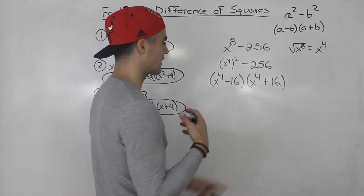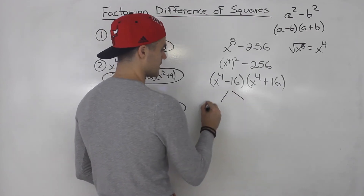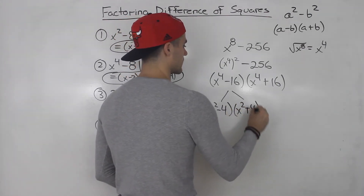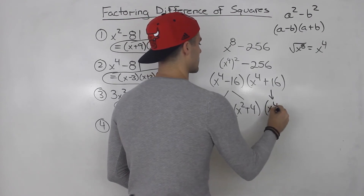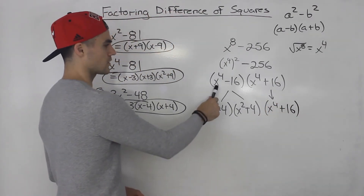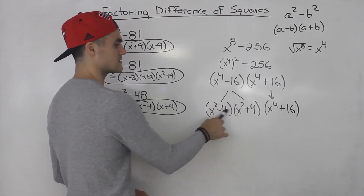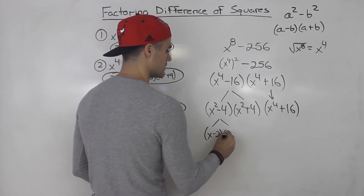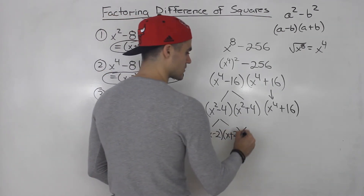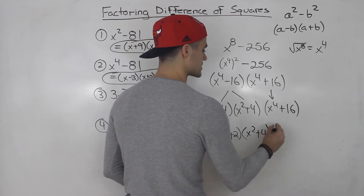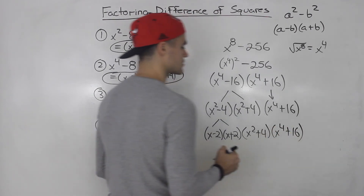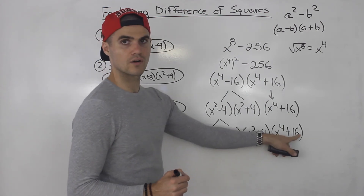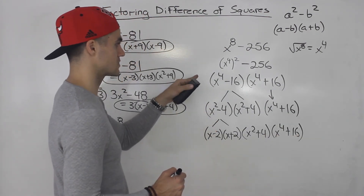x to the 4 plus 16 we can't factor anymore. But x to the 4 minus 16 is a difference of squares, so that would be x squared minus 4 times x squared plus 4. The x squared plus 4 bracket just stays the same. Then notice x squared minus 4 we can factor again into x minus 2, x plus 2, while x squared plus 4 can't factor, so that stays the same. We took this expression and factored it into four different brackets, factoring as a difference of squares three times.